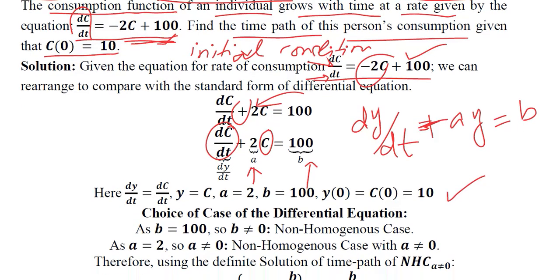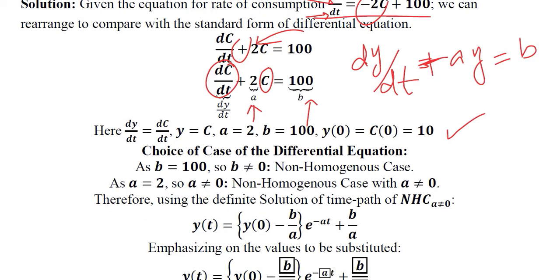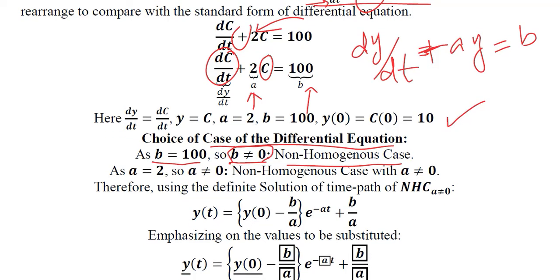Now we choose which case of the differential equation we are dealing with. The value of b is considered first because we want to know if we have a non-homogeneous or homogeneous case. The value of b is 100, which is definitely not equal to 0, so we have a non-homogeneous case. Within that, we consider the value of a which is 2 and is not equal to 0, so we have a non-homogeneous case where a ≠ 0.